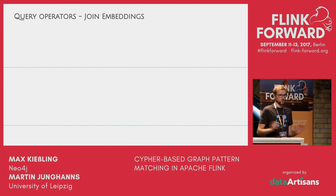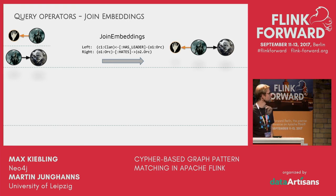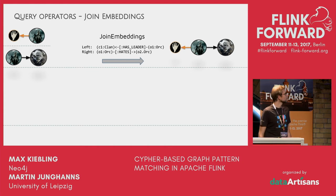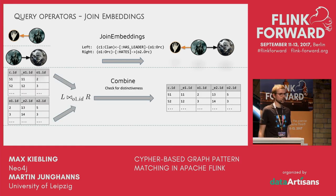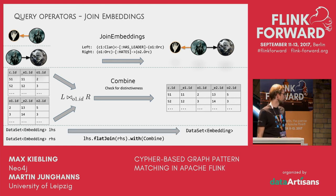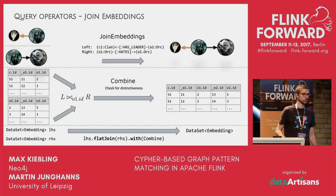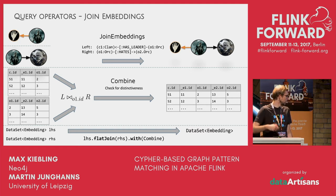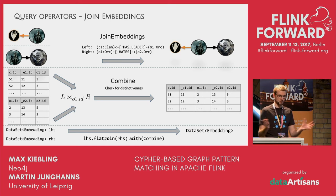In relational algebra we start with the vertex table, apply a selection, then a projection. In Flink we do the same: we have the dataset of all graph vertices and apply a flat map transformation combining selection and projection into one operator, yielding a dataset of small embeddings each containing a single vertex. To expand coverage of the query graph we need to traverse the graph. We join two embeddings on their common element — for example, the orc Azog — using a join operation in both relational algebra and Flink.